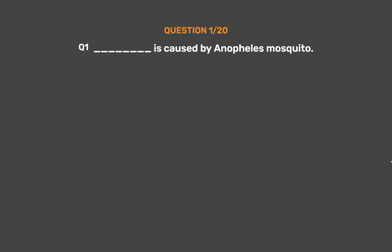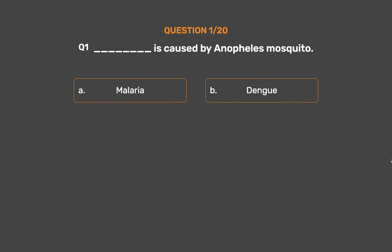Question number 1. Underscore is caused by Anopheles mosquito. Option A: Malaria. Option B: Dengue. Option C: Cholera. Option D: Typhoid.